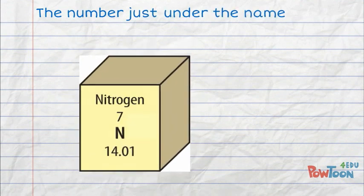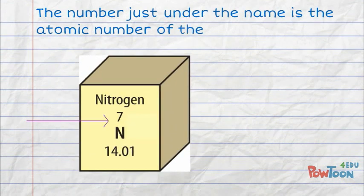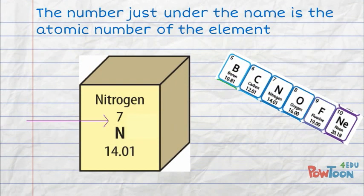The number just under the name is the atomic number of the element. Sometimes it is located in the upper left corner.